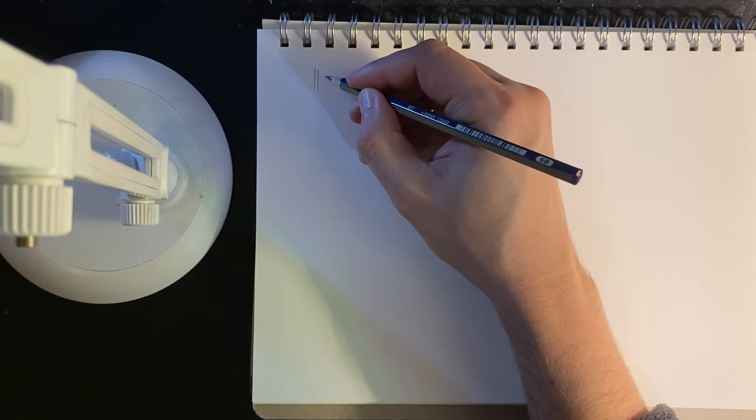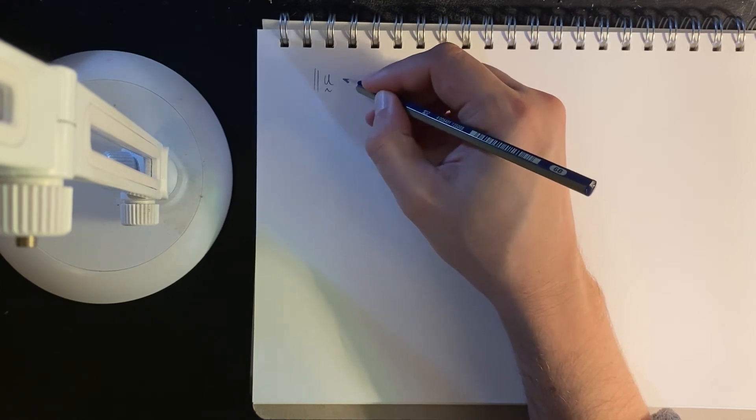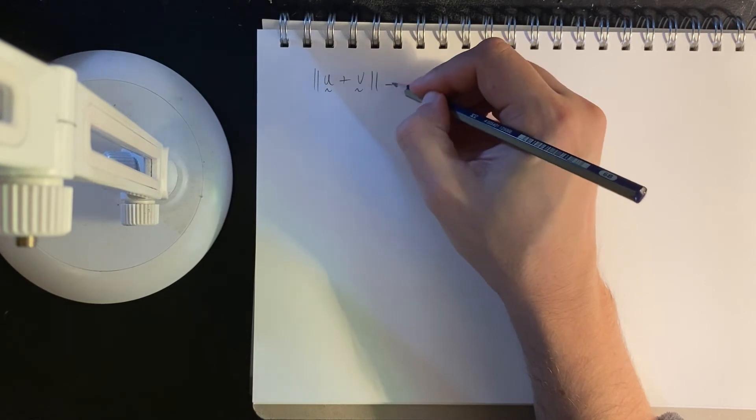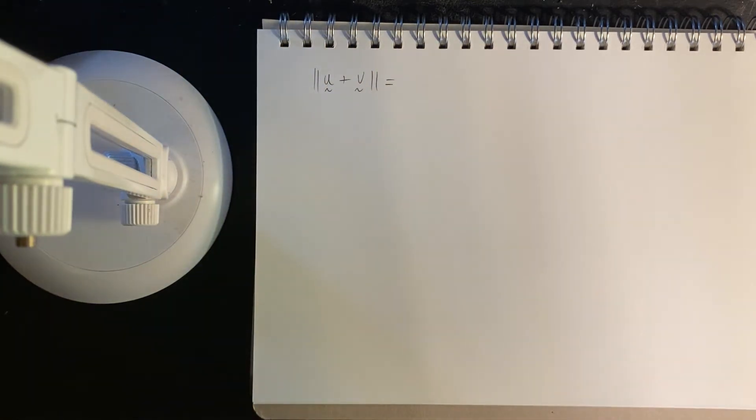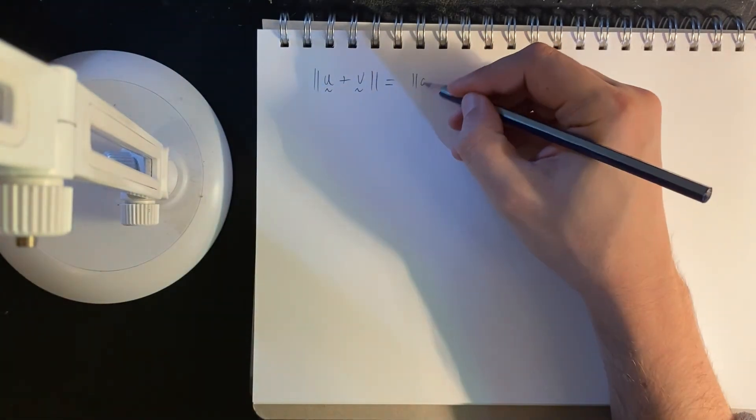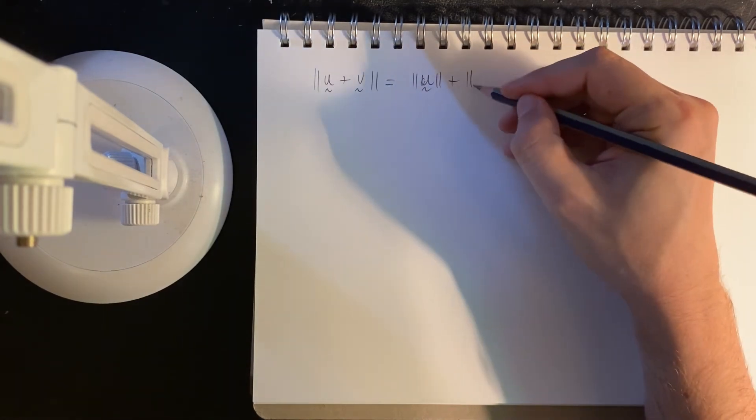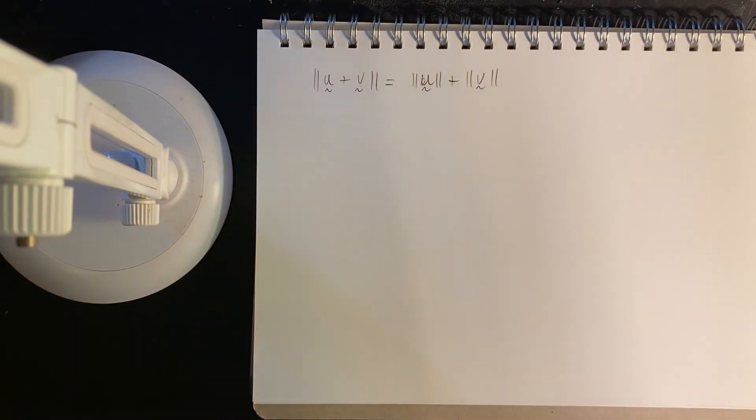And that is, if I have two vectors, sum them up and get the norm, is that equal to just the sum of their lengths?